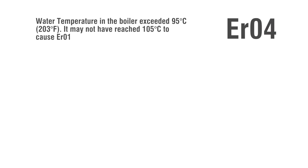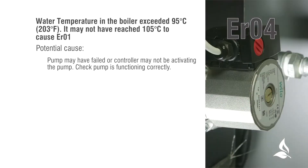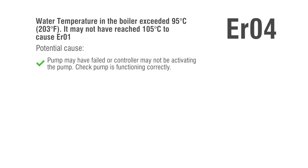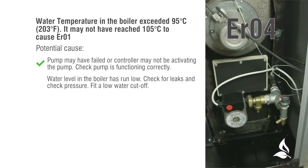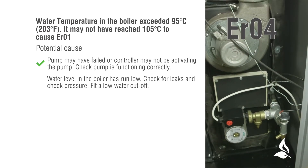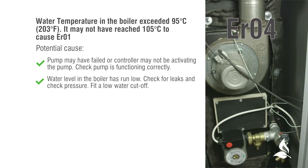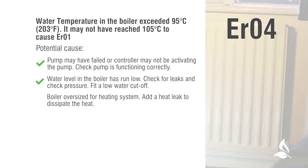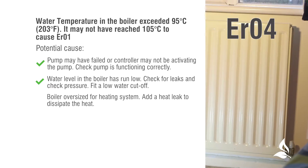ER04: Water temperature in the boiler exceeded 95 degrees Celsius (203 degrees Fahrenheit); it may not have reached 105 degrees Celsius to cause ER01. Potential causes: the pump may have failed or the controller may not be activating the pump — check the pump is functioning correctly. Water level in the boiler has run low — check for leaks and check pressure, and fit a low water cut-off. Boiler oversize for heating system — add a heat leak to dissipate the heat.